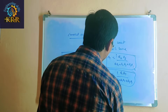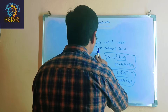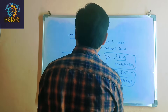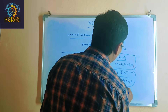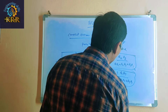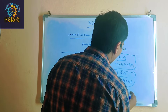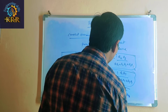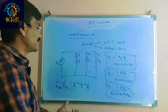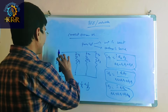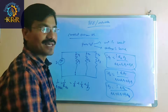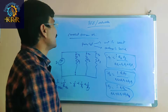Similarly, for current at R3, you take the total current multiplied by the remaining two resistances R1 and R2, divided by R1 plus R2 plus R3. Whichever branch you are calculating, take the remaining two resistances in the numerator. You can easily calculate any branch current using this current division rule.